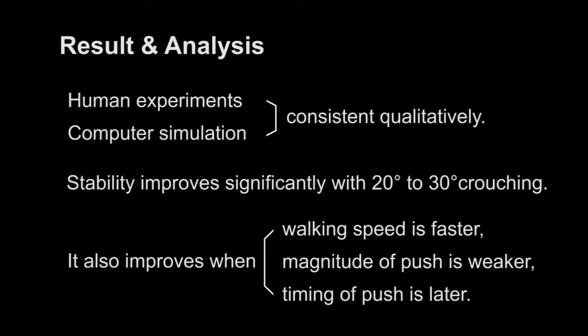The detouring distance is also related to walking speed, the magnitude of push force, and push timing. It detours less if it walks faster, the push is weaker, and the push happens later in the swing phase.